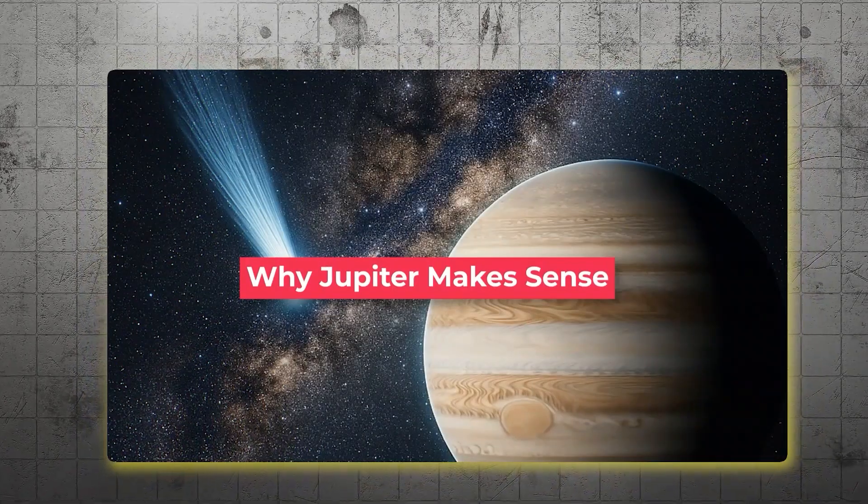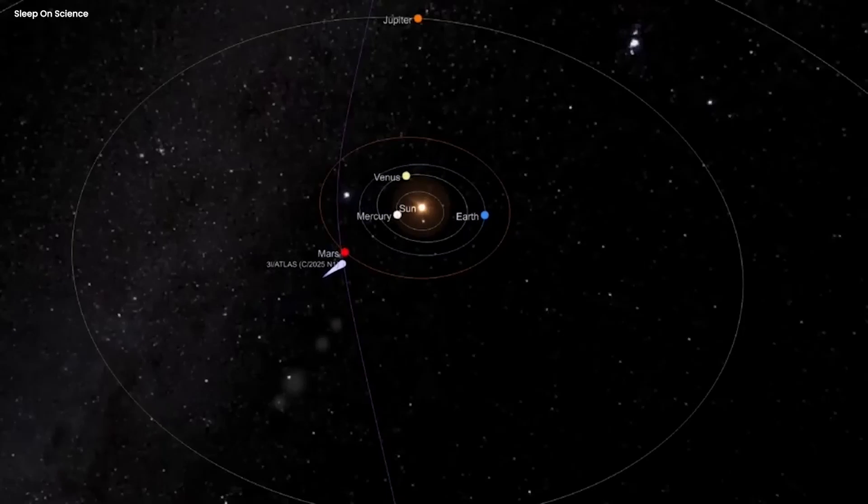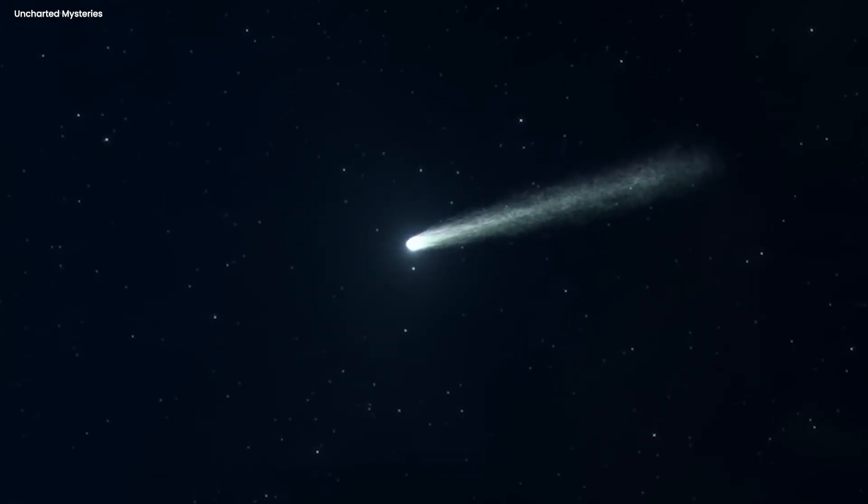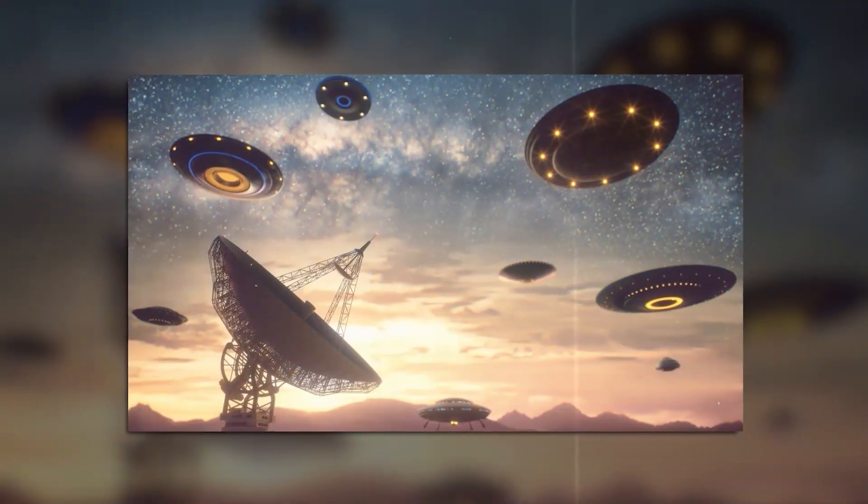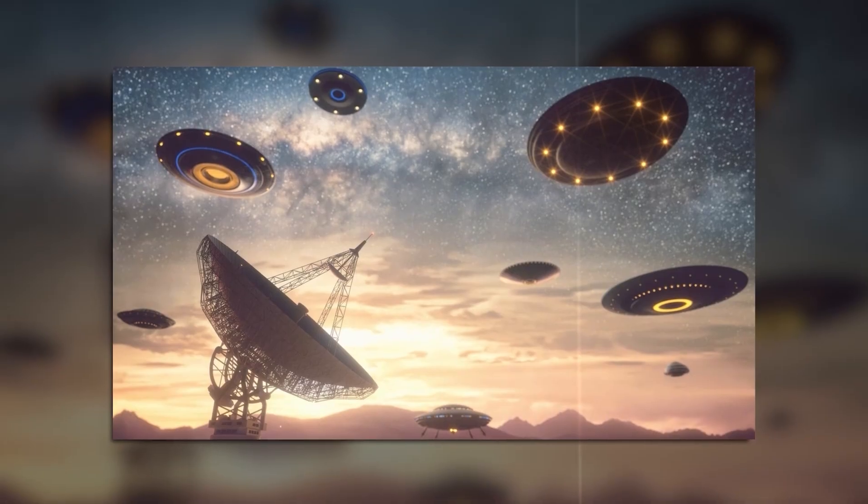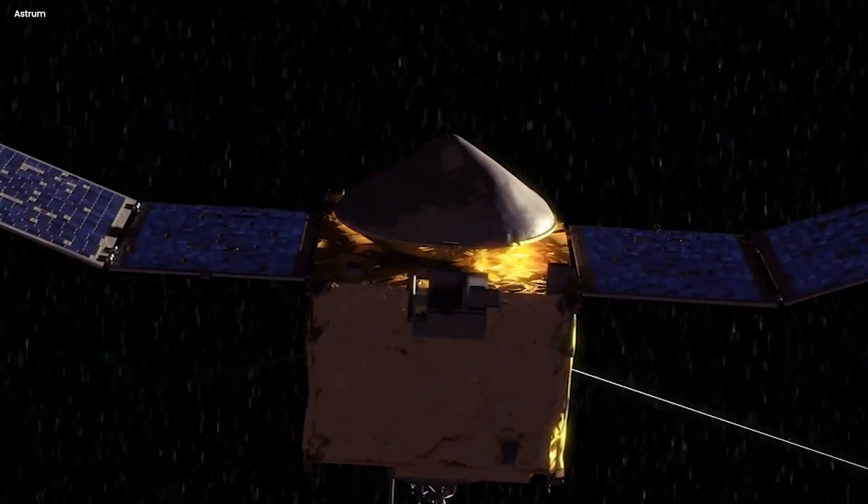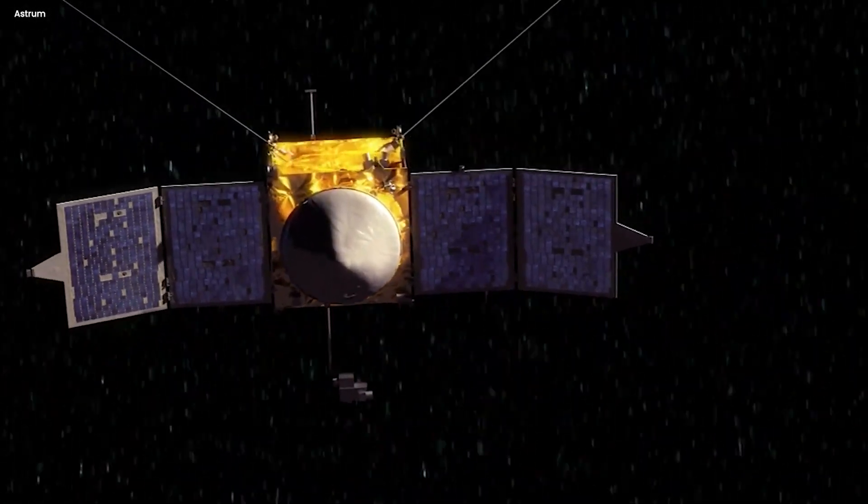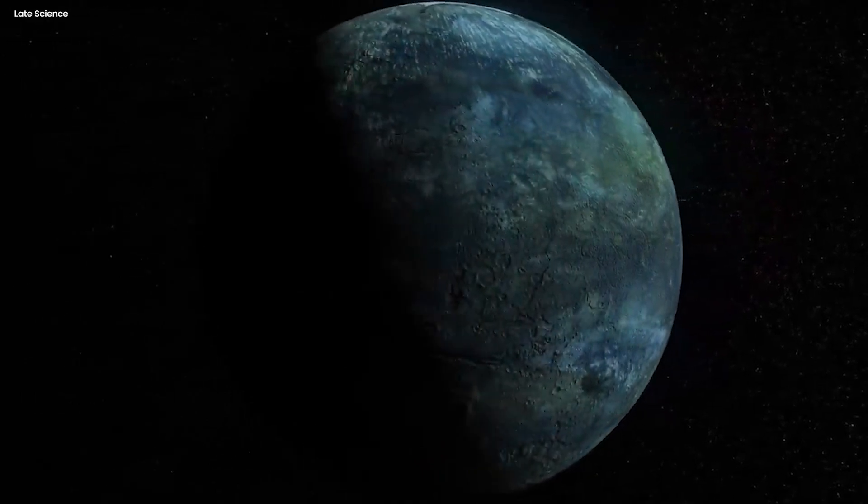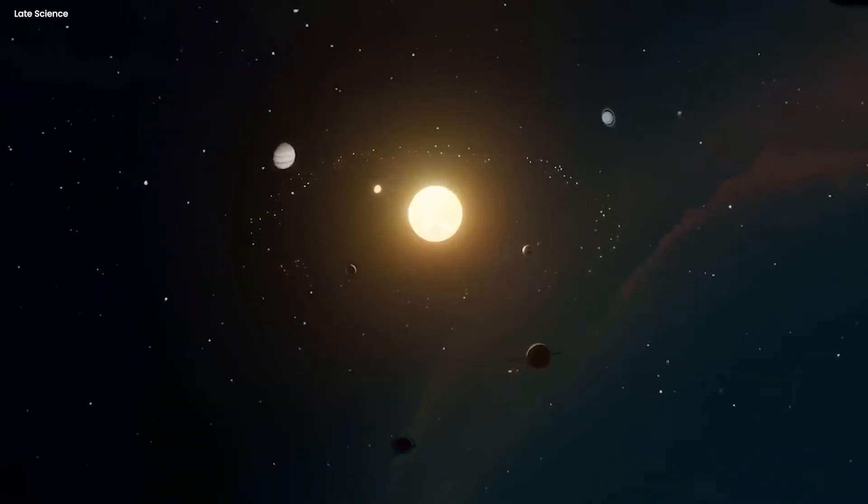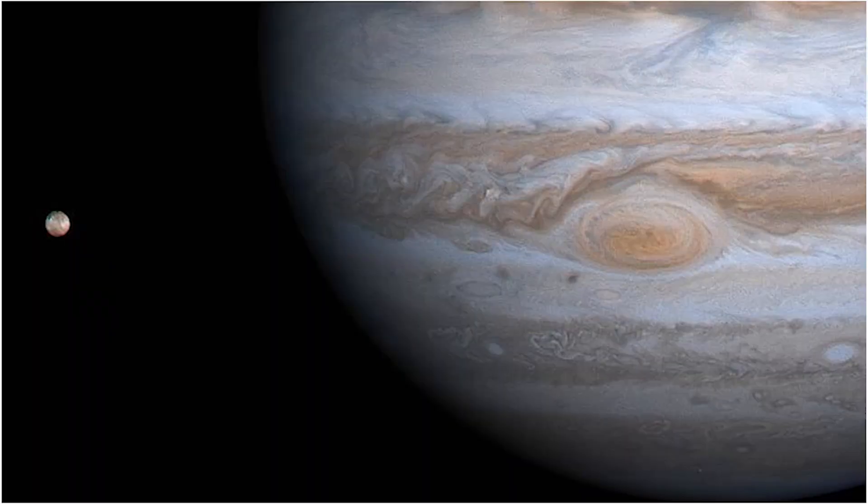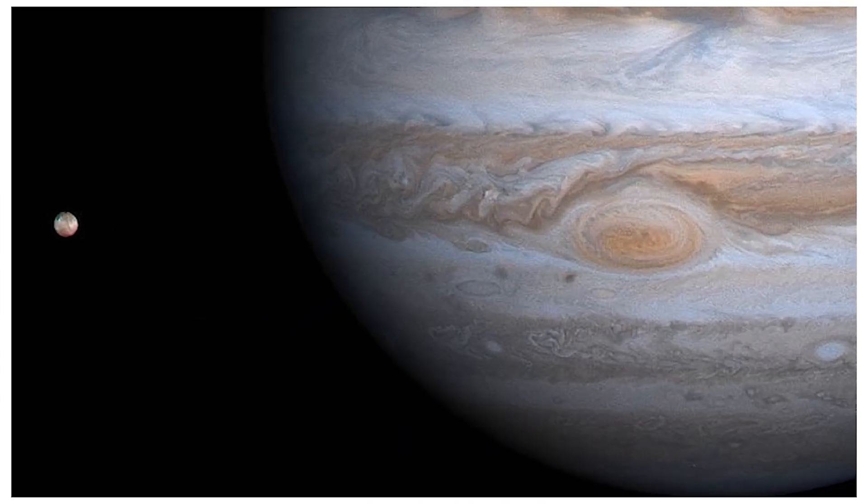Why Jupiter makes sense. And this brings up an important question. If 3I Atlas really is some kind of alien probe that was sent here to explore our solar system, then why would it skip Earth and go straight for Jupiter? Well, let's think about this from the perspective of an advanced alien civilization. You've got the technology to send a probe across interstellar space. You've got billions of years to make the journey. And you finally arrive at a new star system. Where do you go first? Do you visit the small rocky planet with some water and some primitive life forms? Or do you visit the absolutely massive gas giant that dominates the entire solar system? Because here's the thing. Jupiter isn't just big. It's obscenely big.